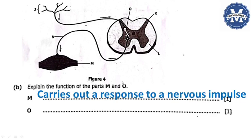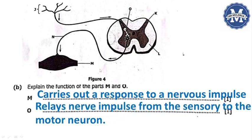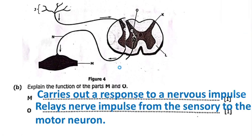Then, what is the function of the part labeled O right here? The part labeled O, this is the relay neuron. What does it do? It just relays a nerve impulse from the sensory neuron to the motor neuron. The function of the part labeled O is relay nerve impulses from the sensory to the motor neuron. We have answered our question B. We now move on to our next question.